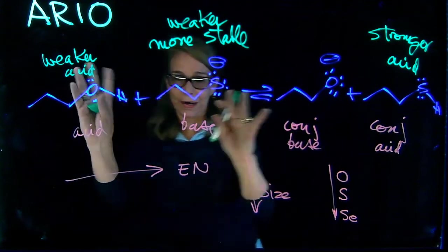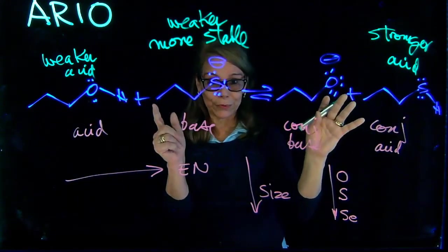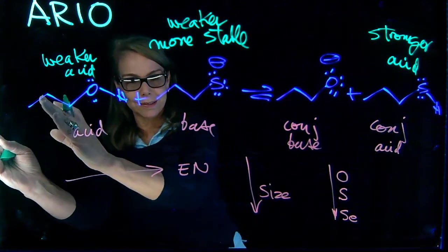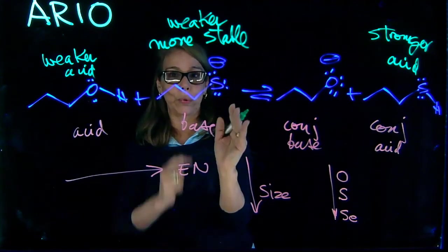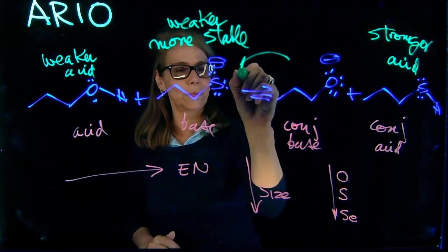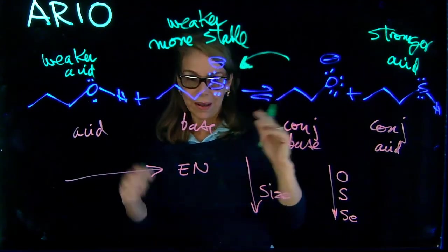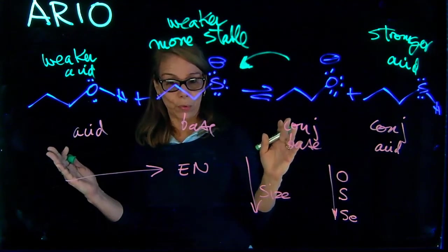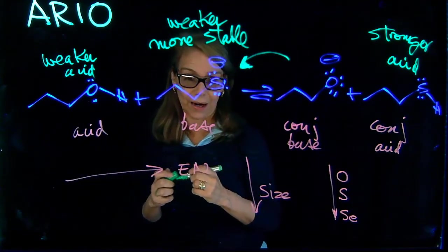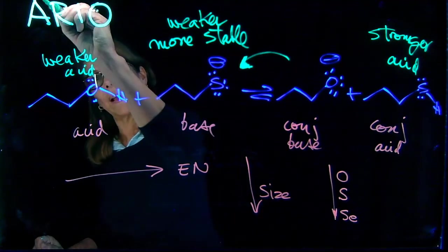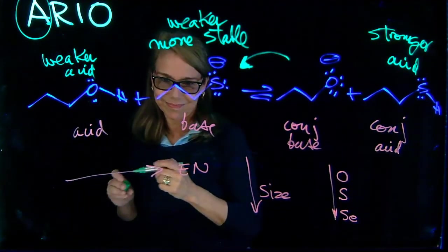And now that I have established that, equilibrium goes towards weaker acid. Here we have weaker acid, weaker base. So this is where your equilibrium is shifted to. I didn't use pKa. What I did use was the ARIO tool to determine that. And I was analyzing this effect.